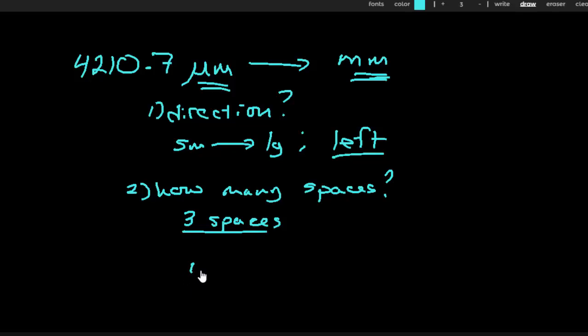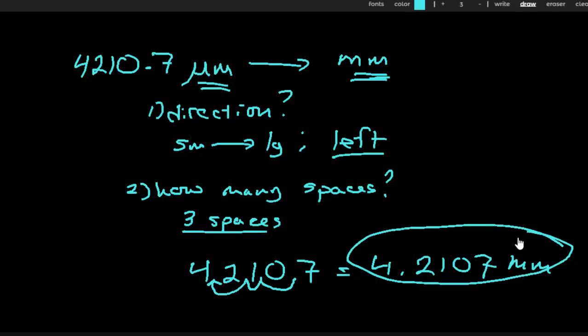So right now, I take the digits 4,210 and the 7 and the decimal point was here. So it's going to go one, two, three spaces right up there. So 4.2107 millimeters is my answer to this one. Not too difficult. All right, now you're going to try one. I want you to tell me if you have .0035 meters, how many nanometers is that? So stop the video and try it out and then come back when you're done.